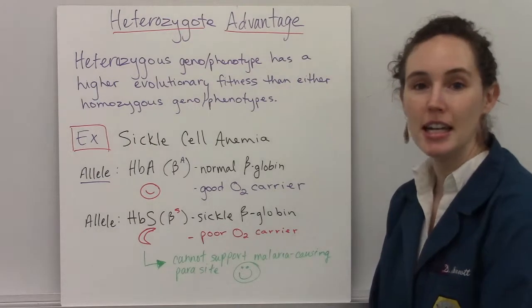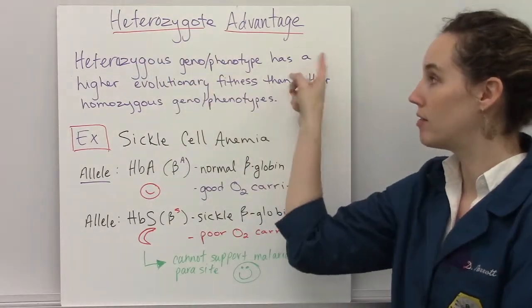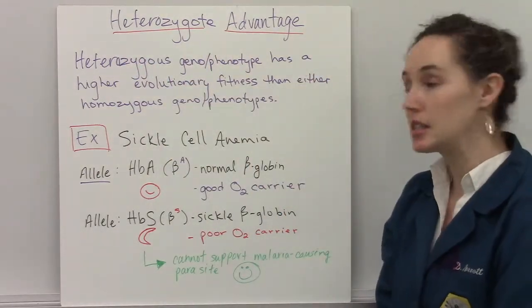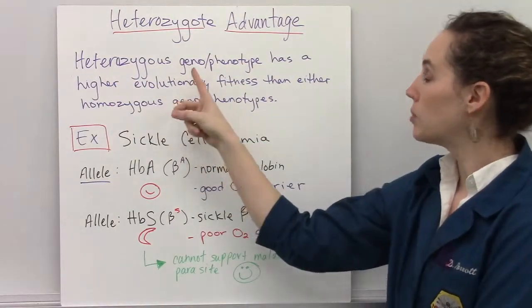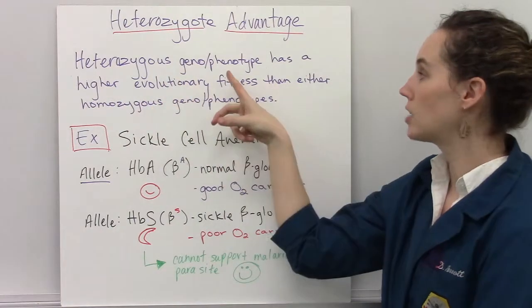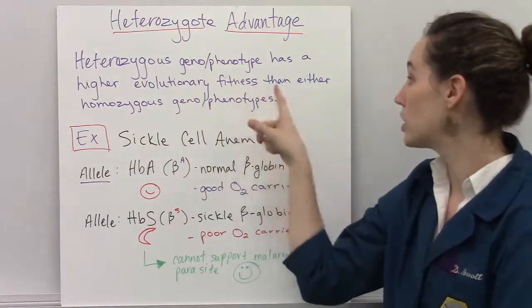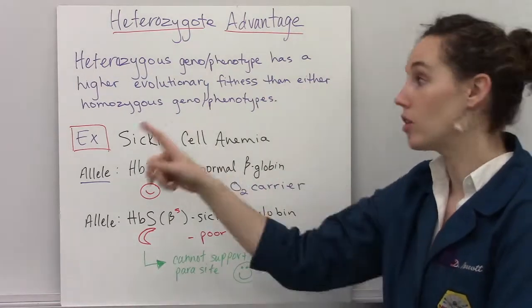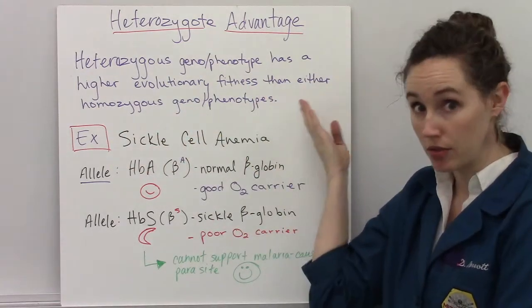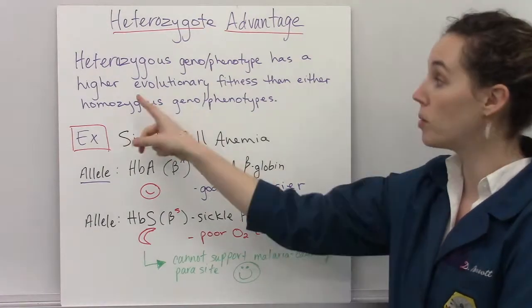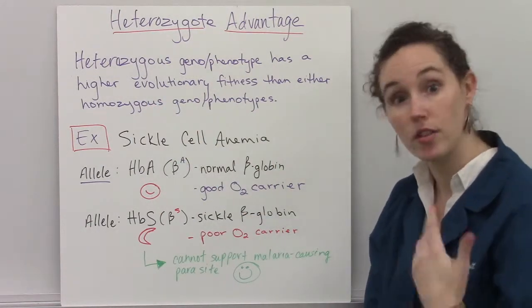This video is about the concept of heterozygote advantage. This explains the way that a heterozygous genotype — an organism with a heterozygous genotype and resulting phenotype — will actually have a higher evolutionary fitness than either homozygous genotype and the resulting phenotypes of those. Remembering that evolutionary fitness refers to one's ability to survive and reproduce.